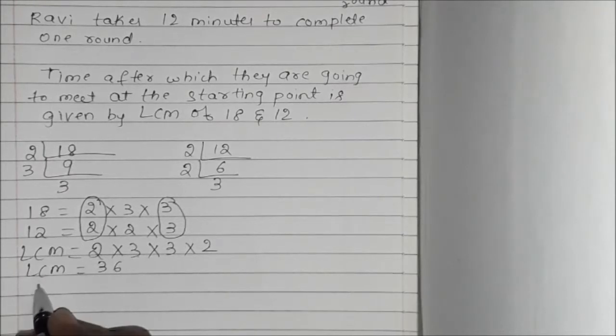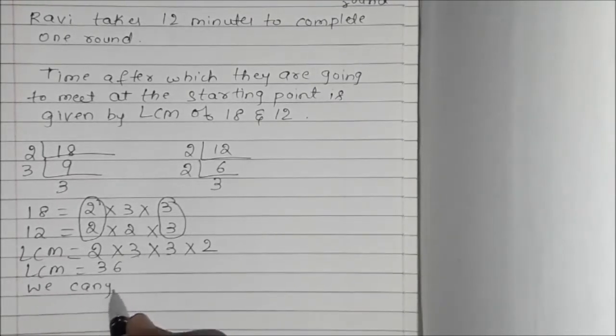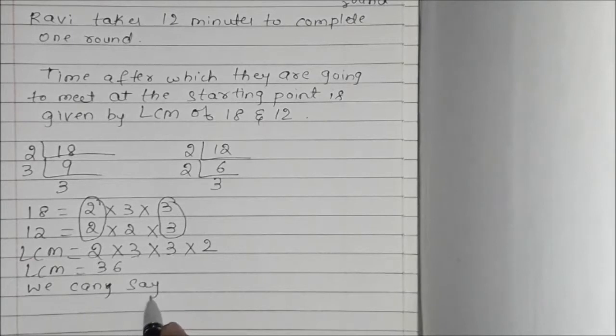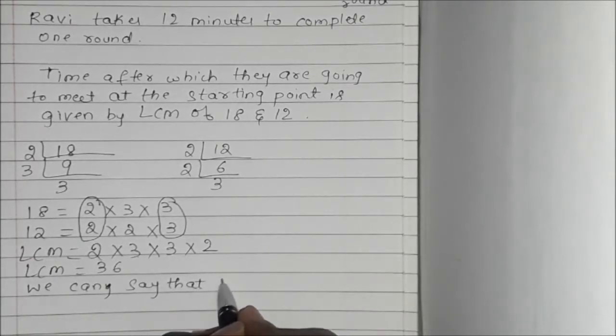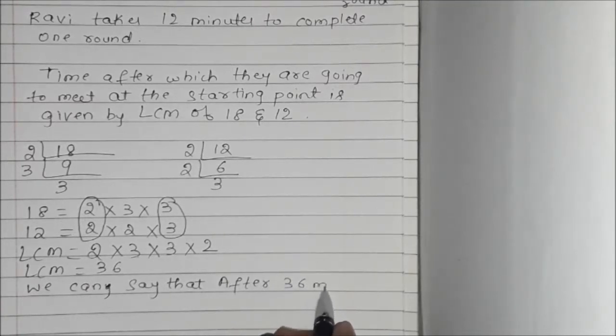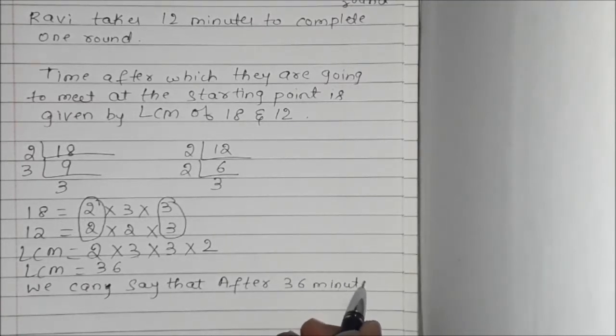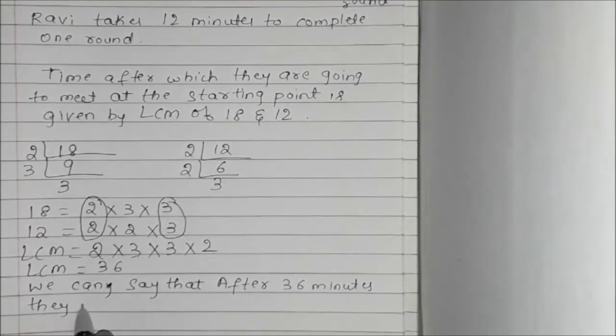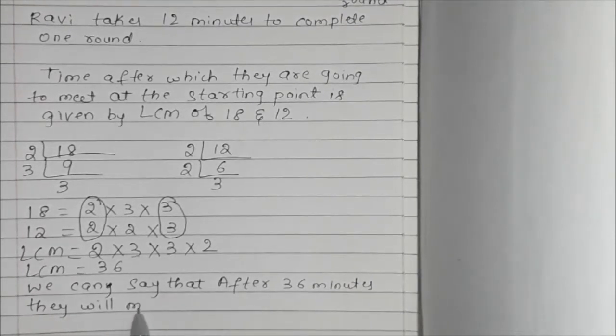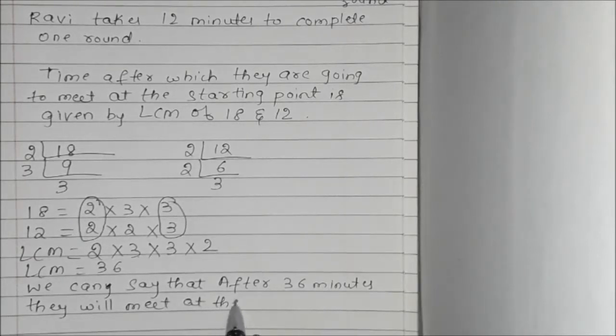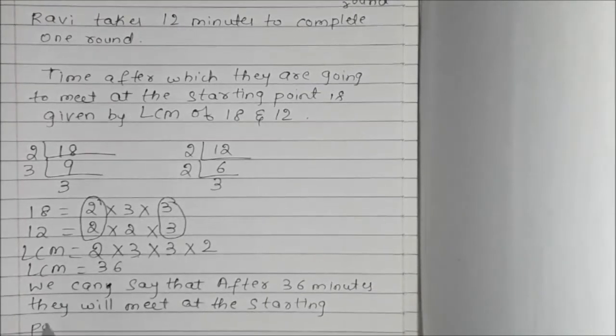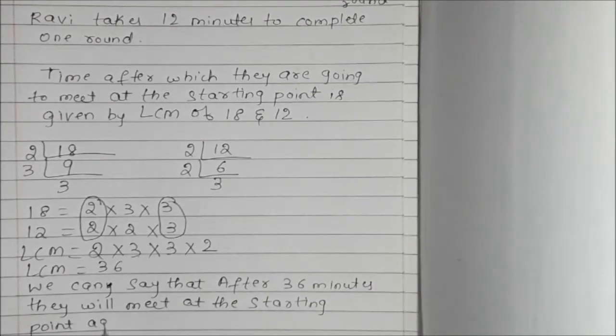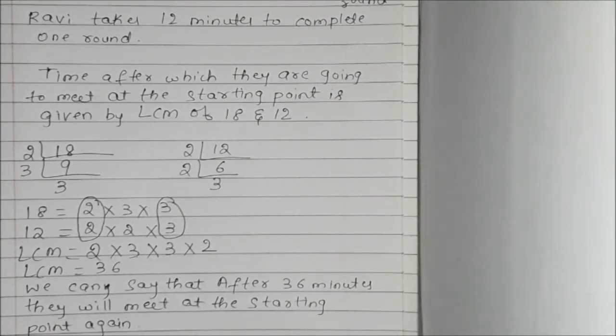So we can say that after 36 minutes they will meet at the starting point again. To find this we have to just find the LCM of these 2 numbers. Then you will get the answer.